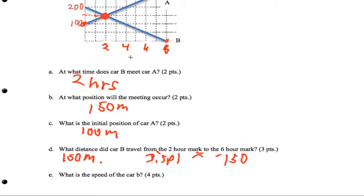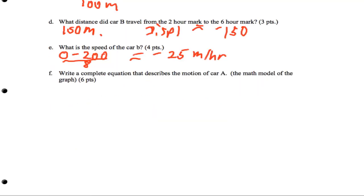What's the speed of car B? Let's calculate that. Zero is its final position, 200 is its beginning. This happens over an eight-hour period, so we get negative 25 miles per hour for the speed of the car.